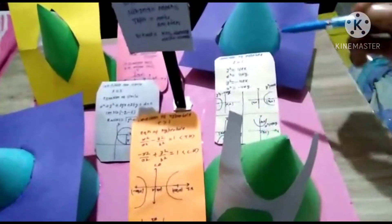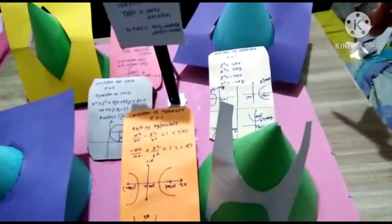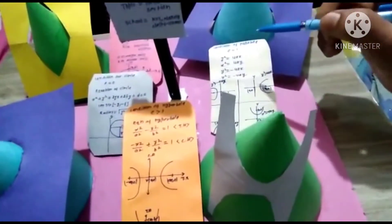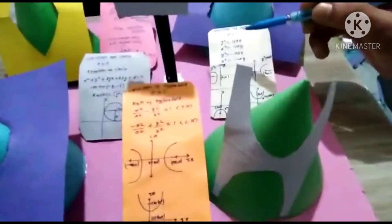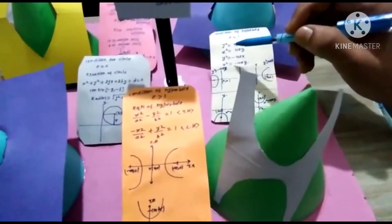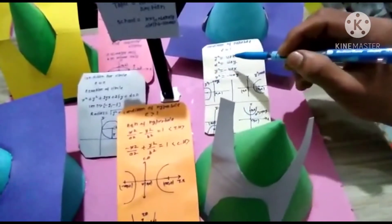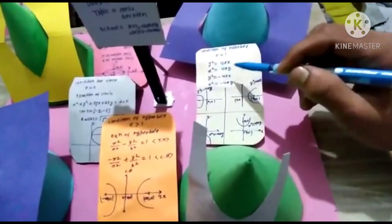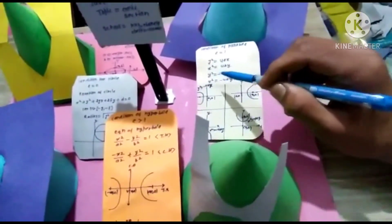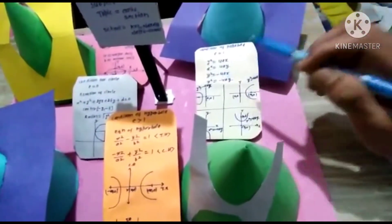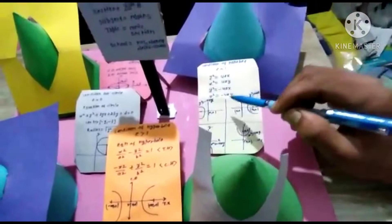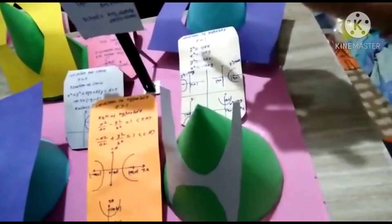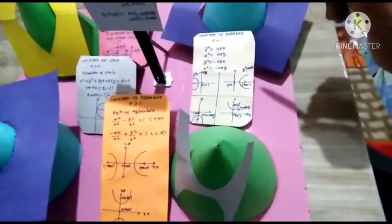Then next is the equation of parabola. In this, eccentricity is equal to 1. Then y square is equal to 4ax, x square is equal to 4ay, y square is equal to minus 4ax, x square is equal to minus 4ay. Then we make a parabola.